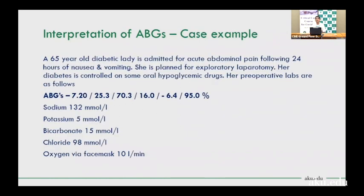Case example one: a 65-year-old diabetic lady admitted for acute abdominal pain following 24 hours of nausea and vomiting, planned for exploratory laparotomy, controlled on oral hypoglycemics. ABG: pH 7.29, PCO2 30, PO2 70.3, bicarbonate 15, base deficit −6.4, SpO2 95%. Electrolytes: sodium 132, potassium 5.